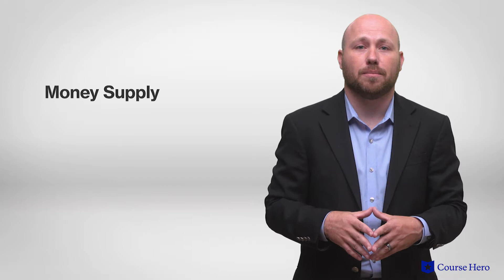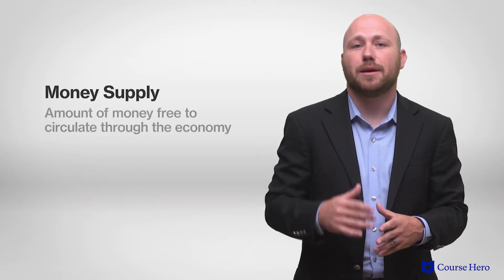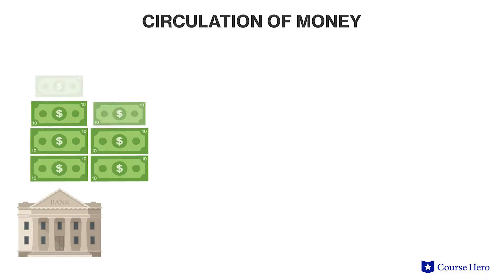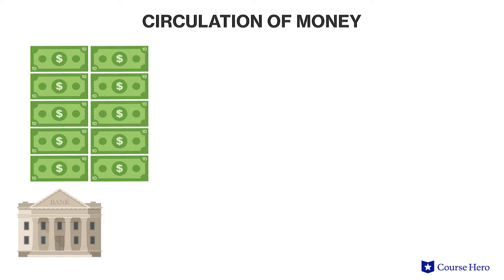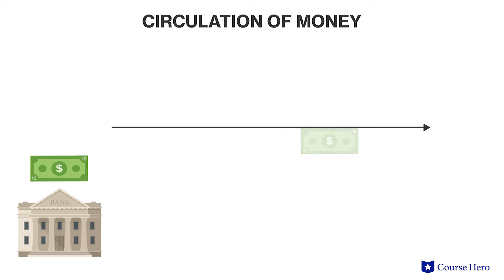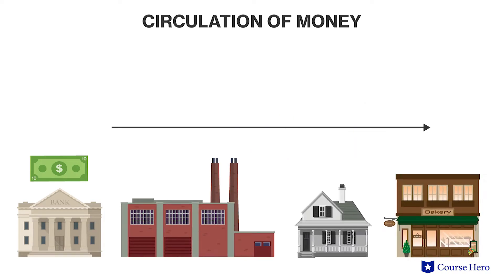Fractional reserve banking also increases national money supply, which is the amount of money free to circulate through the economy. As an example, instead of $100 being deposited and remaining unavailable for use, $90 circulates in the economy and contributes to economic activity and growth.